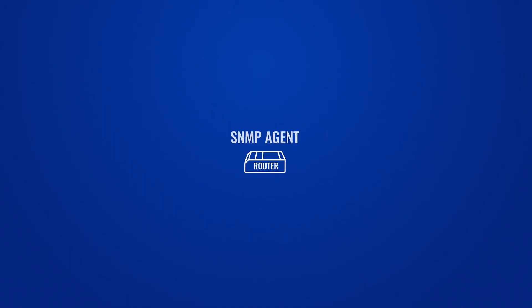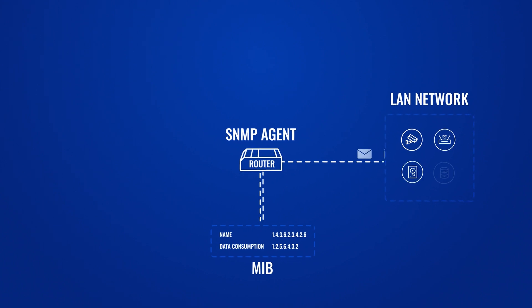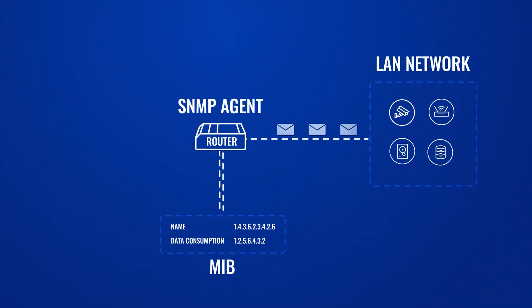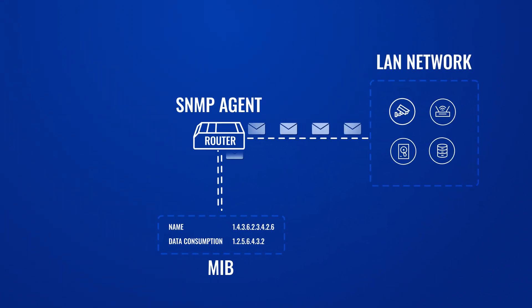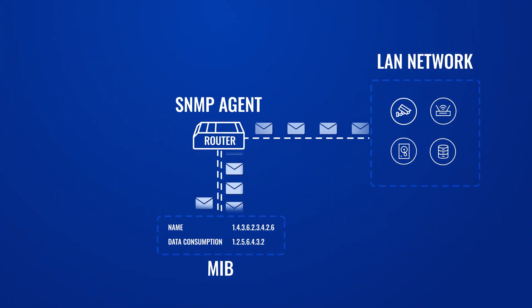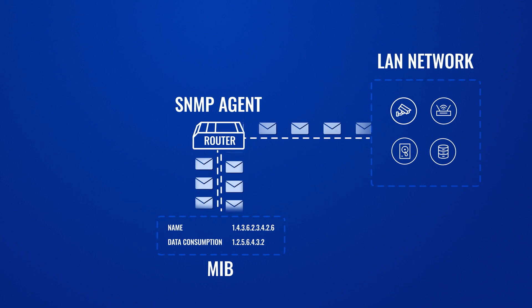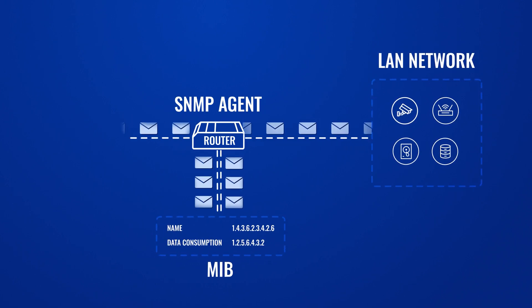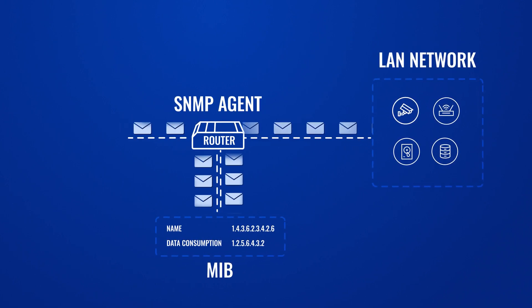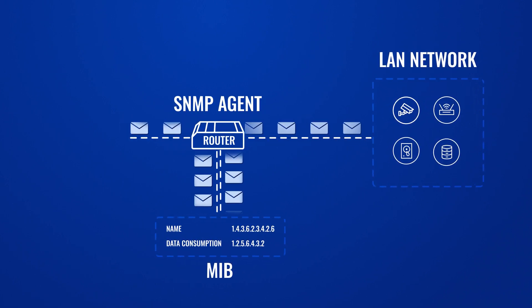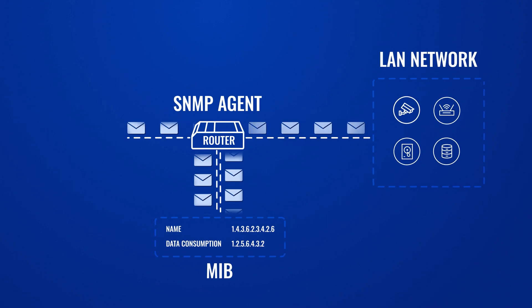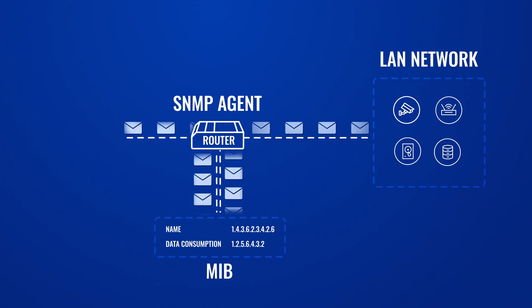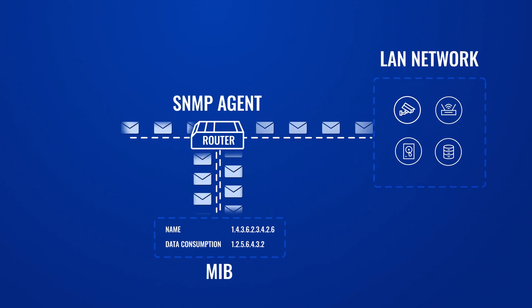Let's say you set up your SNMP agent, a router, to collect information about your network's data consumption. The networking device will do just that and use MIB files as an aid to navigate through the configuration of the SNMP agent, represented by OIDs.